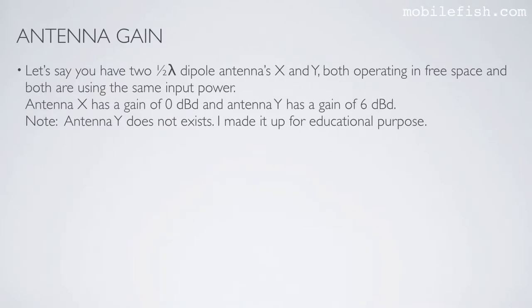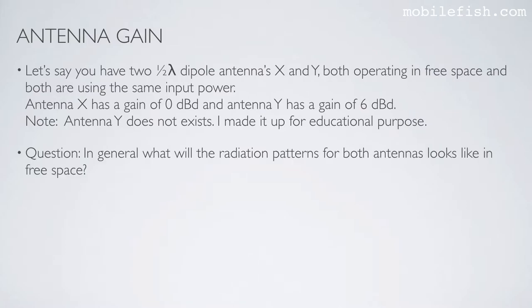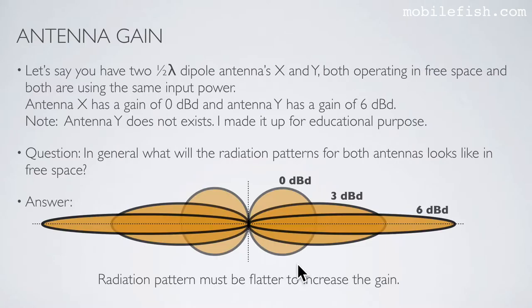Let's say you have two half-wave dipole antennas X and Y, both operating in free space and using the same input power. Antenna X has a gain of 0 dBd and antenna Y has a gain of 6 dBd — antenna Y does not exist, it was made up for educational purposes. In general, the radiation pattern is flatter for 0 dBd, more compressed for 3 dBd, and even flatter still for 6 dBd. As the gain increases, the radiation pattern becomes flatter.